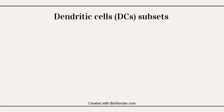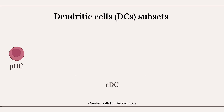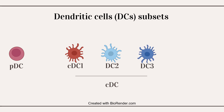Dendritic cells act as a critical bridge between the innate recognition of antigen and the induction of adaptive immunity. Under healthy homeostasis, DCs comprise two distinct lineages: plasmacytoid dendritic cells or PDCs, and conventional dendritic cells or CDCs. They can be categorized into three groups: CDC1, DC2, and DC3.